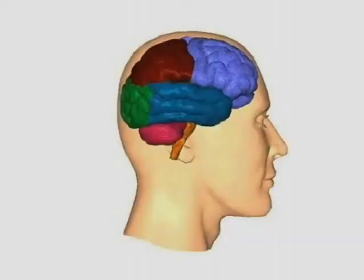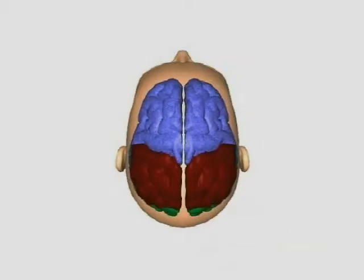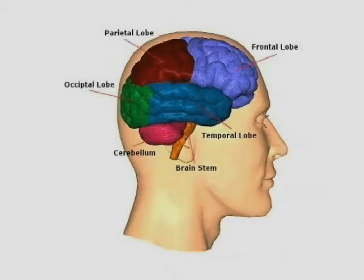The thinking part of the brain is called the cerebrum. The cerebrum has two halves called hemispheres. The cerebrum has four lobes that mirror one another on the two hemispheres of the brain.